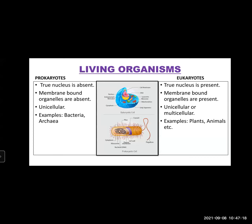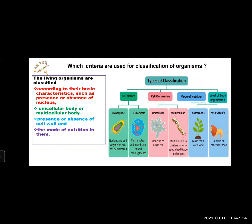This was the basic difference between prokaryotes and eukaryotes. The second criterion: unicellular or multicellular body. Unicellular body means it is made up of a single cell — you can take the example of amoeba, protozoa. Multicellular body means multiple cells are there and these cells cluster to form tissues and organs, which are responsible for various life processes in that organism. Then, presence or absence of cell wall — you have already studied plant cell and animal cell.